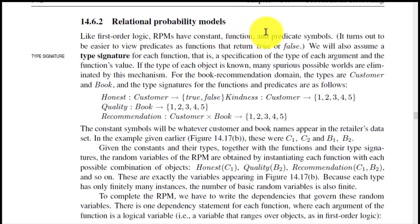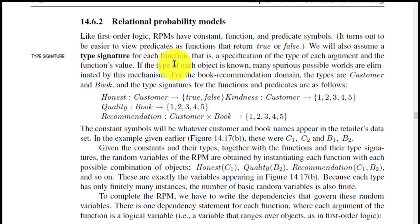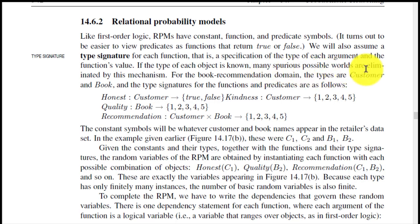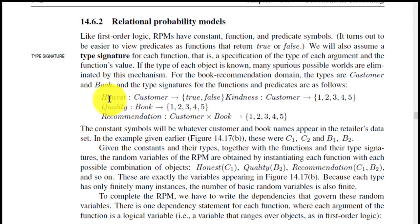Relational probability models (RPMs), like first-order logic, have constant, function, and predicate symbols. We also assume a type signature for each function — the specification of the type of each argument and its value. If the type of each object is known, many spurious possible worlds are eliminated. For the book recommendation domain, the types are Customer and Book: Honest is a property of Customer, Quality is a property of Book, and Recommendation involves Customer and Book.